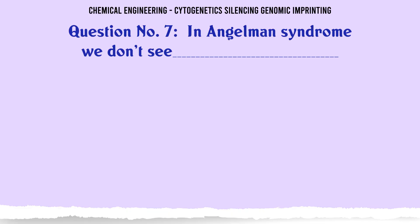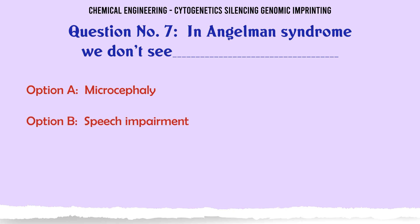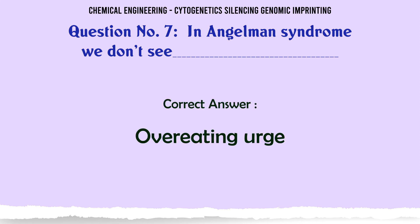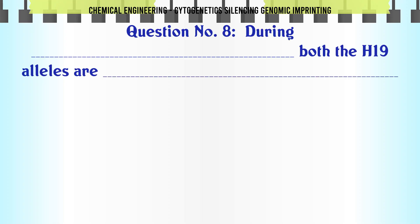In Angelman's syndrome, we don't see: A. Microcephaly, B. Speech impairment, C. Overeating urge, D. Unprovoked laughter. The correct answer is C: Overeating urge.